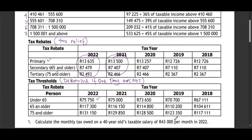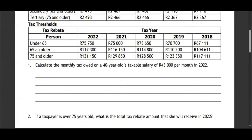Let's jump into an example straight away. Calculate the monthly tax owed on a 40-year-old with a taxable salary of R43,000 per month in 2022. We shall only look at 2022 — we ignore the other years. The age is 40 years, which means it qualifies for the primary rebate only.